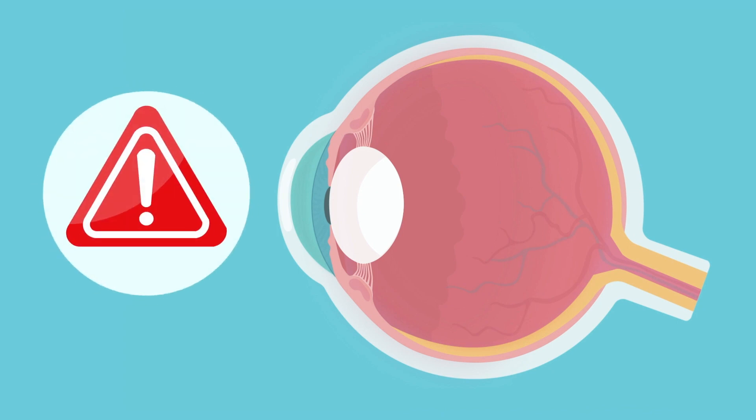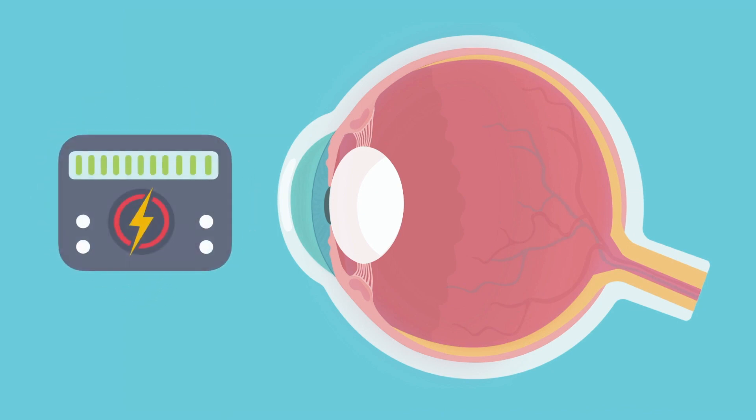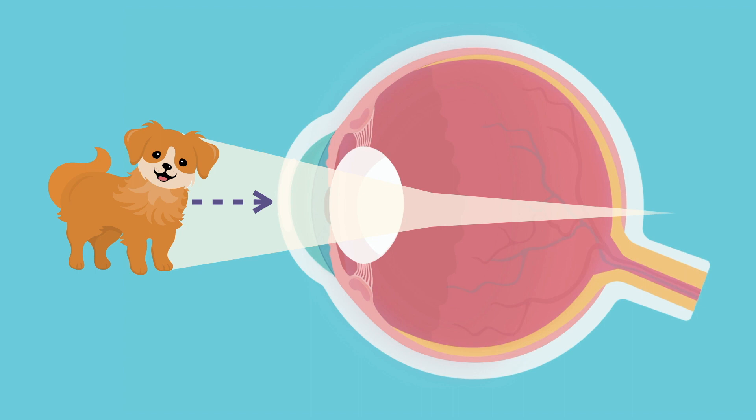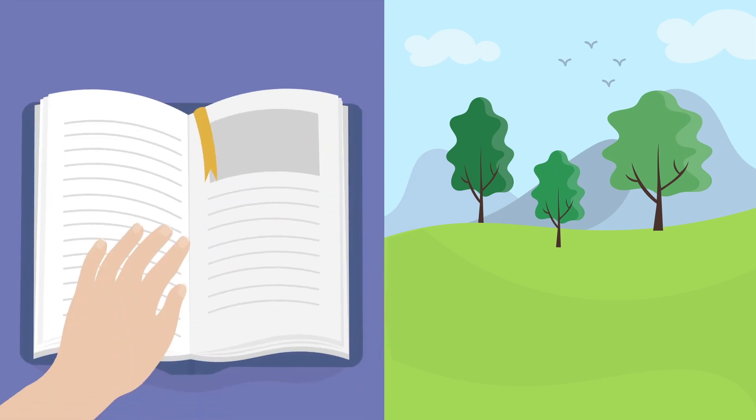However, there is a limit to how much the ciliary body is capable of increasing the refractive power of the lens. So when an object is close, the light rays converge to a point behind the retina even when the ciliary body is at its maximum contraction. This results in people with hyperopia having better visual acuity at far distances than at near distances.